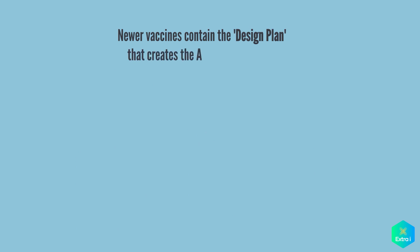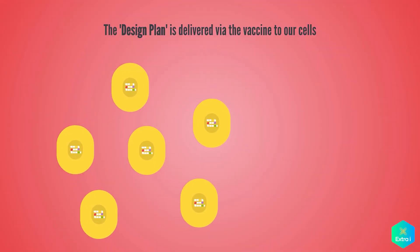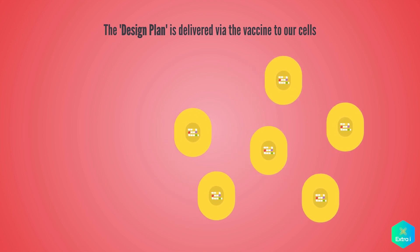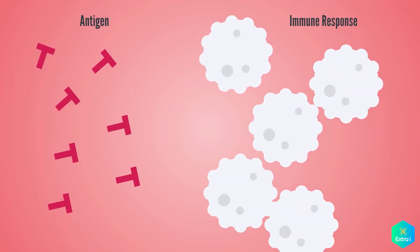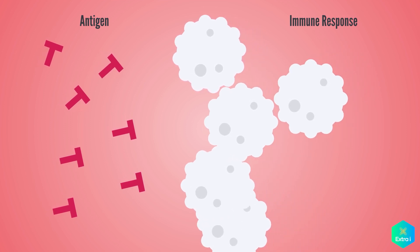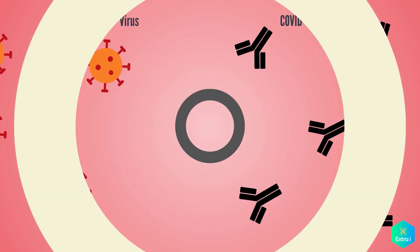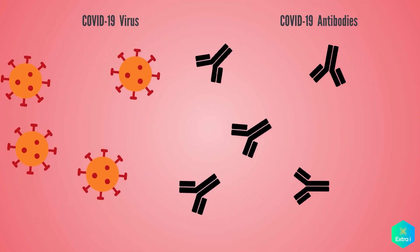Alternatively, newer vaccines, like the COVID-19 vaccines, contain the design plan for making a small part of the disease-causing organism. This design plan is then delivered to our cells via a sphere of fat or a weakened virus. Our own cells then make this small part — the antigen — themselves, and this then generates an immune response. This then enables your body to attack the actual organism should it try to infect you.